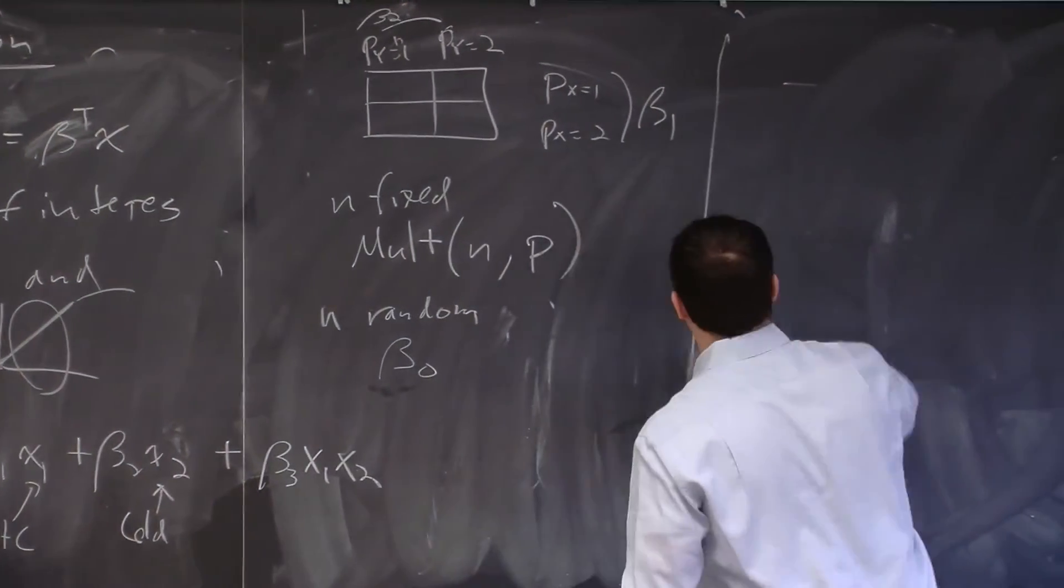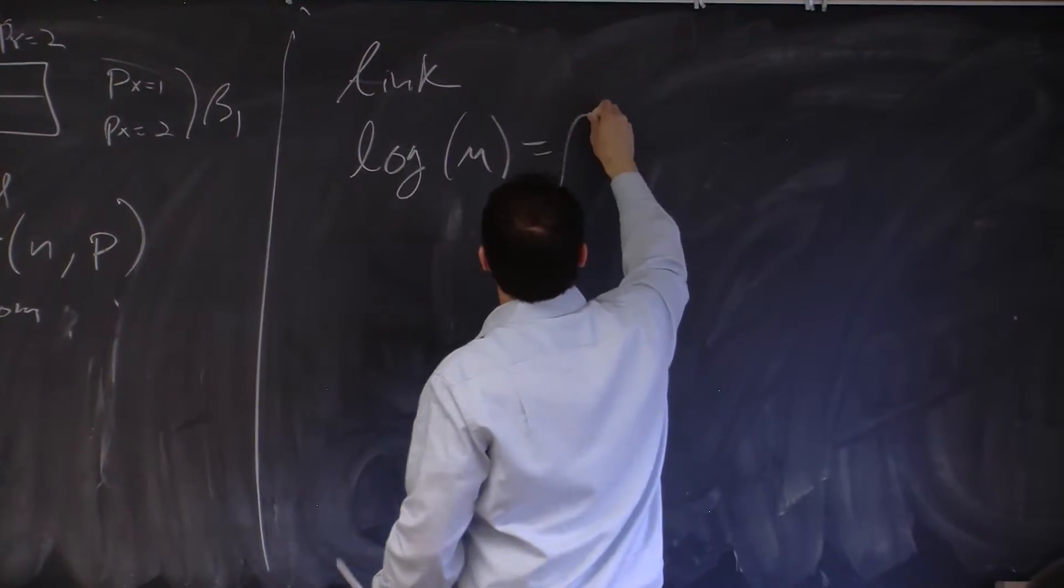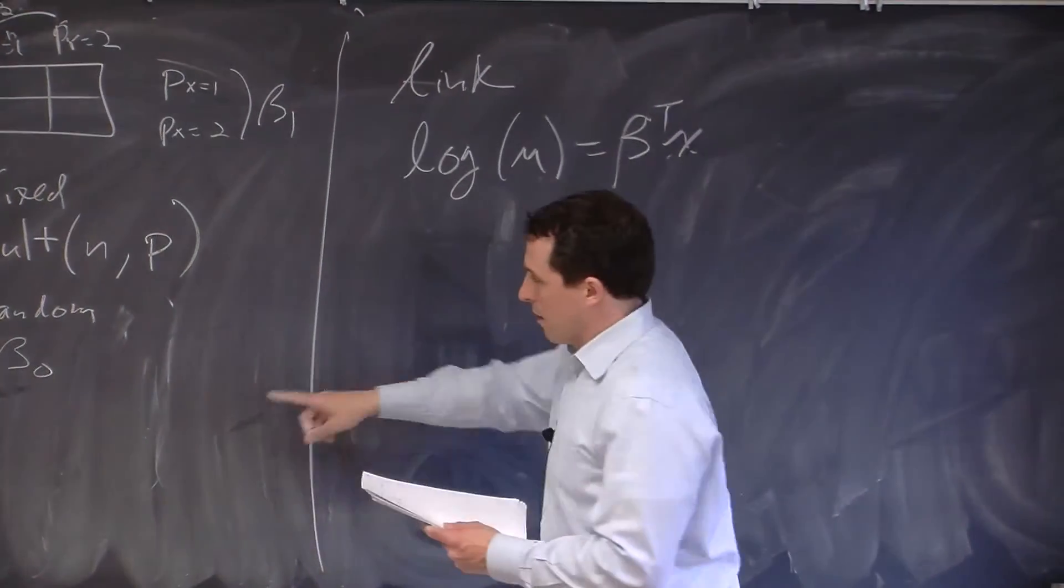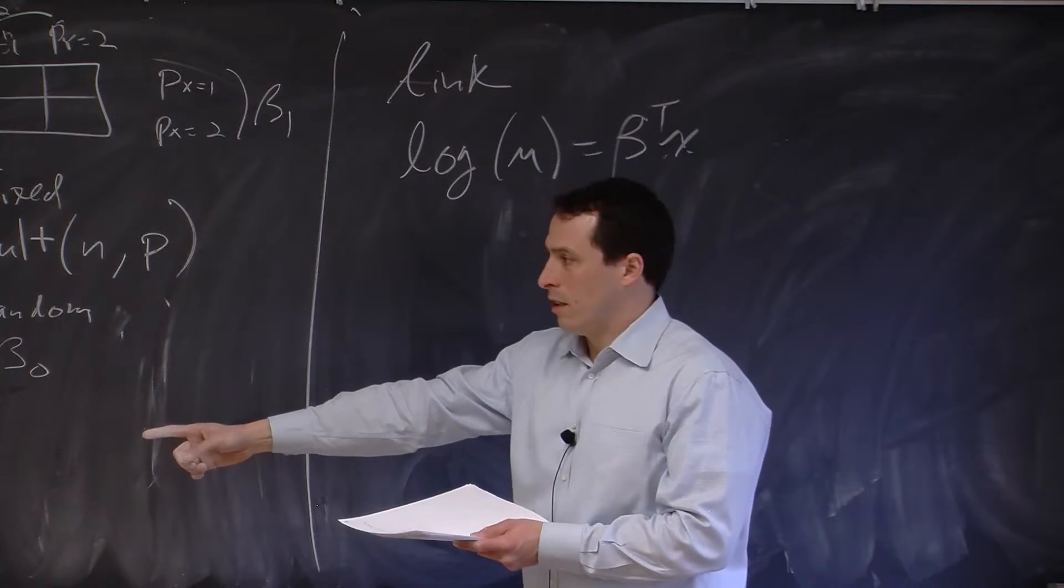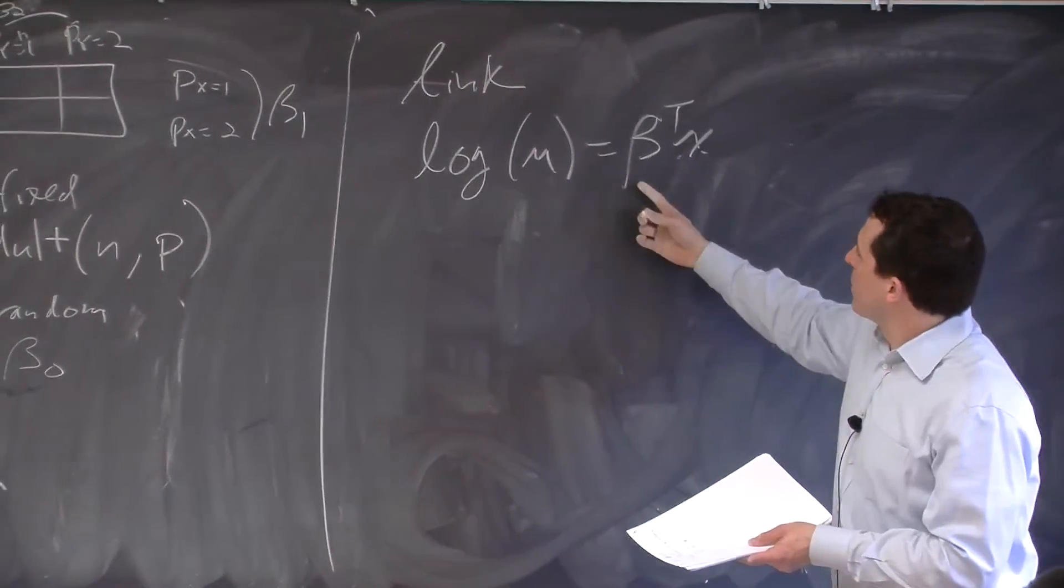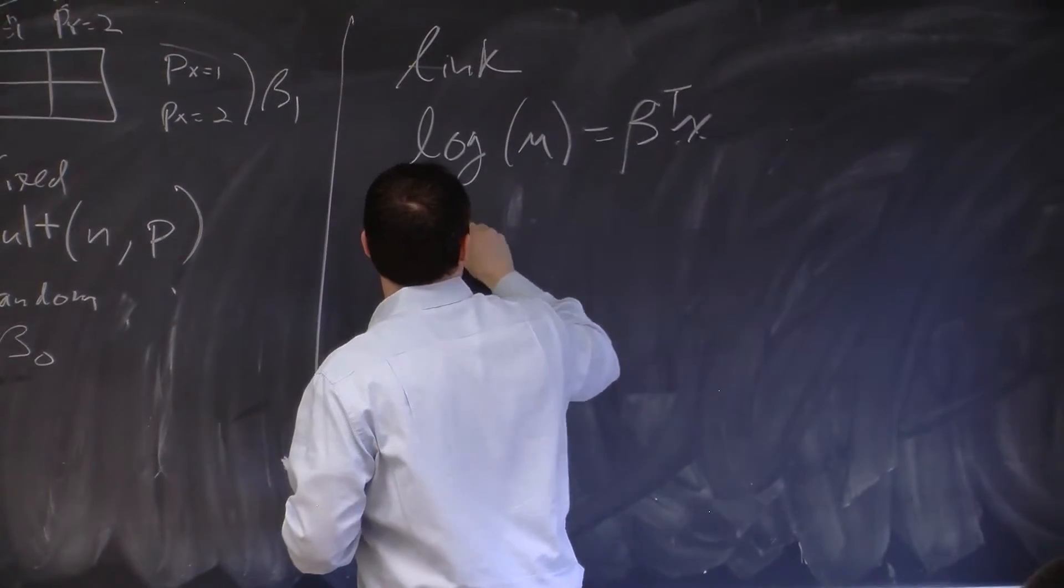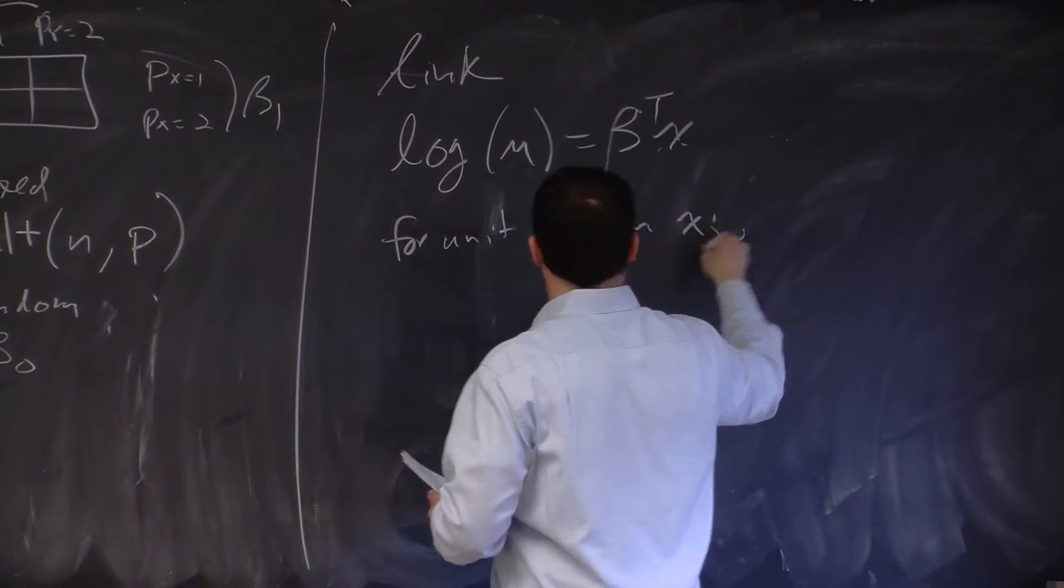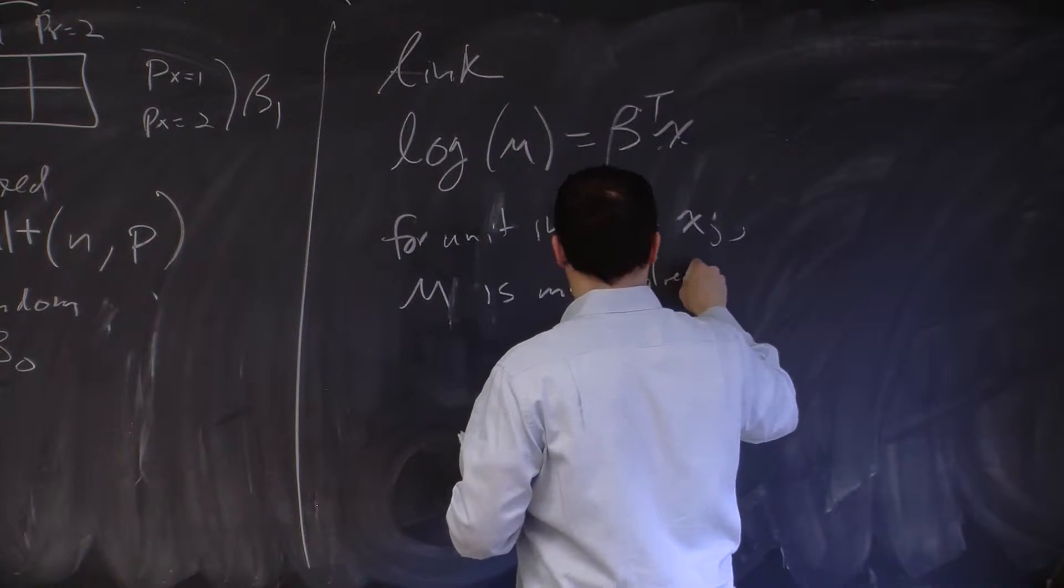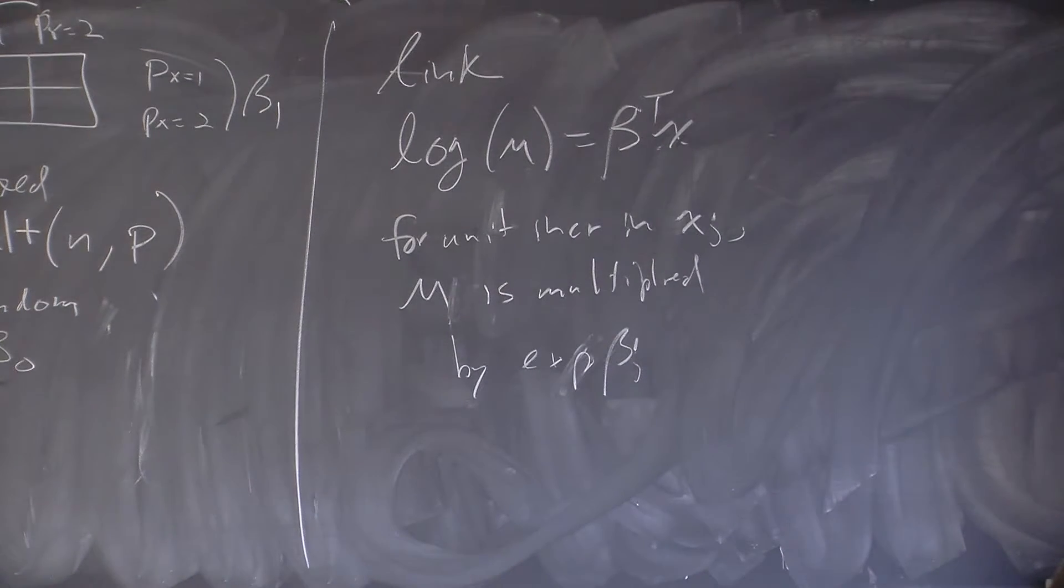So identity function is one of them. The other function that I can think about as a link that's common is log. So log mu equals beta transpose x. For each unit increase in x_j, this one says I add beta to the total. This is like really how much do I have to add to get the number to be right. And in this one, for each increase in x, I multiply my mu by some constant. In x_j, mu is multiplied by exp(beta_j). And if beta_j is positive, it's increasing. And negative, it's decreasing.